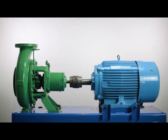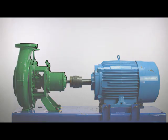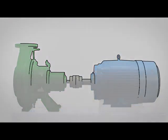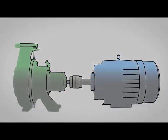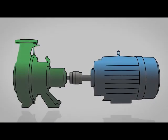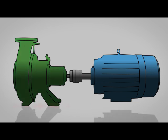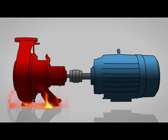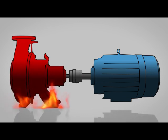Thermal growth is the amount that the center lines of a machine change, both vertically and horizontally, due to temperature changes. This occurs because as the temperature of the machine rises, the metal expands.